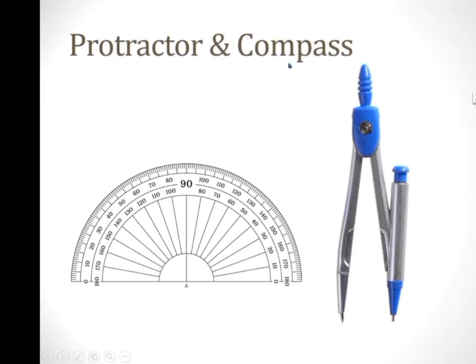Protractor and compass. A protractor is used to measure inclination — it is calibrated on its circumference in degrees, so we can mark and measure angles in both clockwise and anti-clockwise directions. Next is the compass. A compass has two legs: the first leg has a pointed needle rested on the drawing sheet, while the other leg has a pencil attachment. This instrument is used to draw arcs and circles.